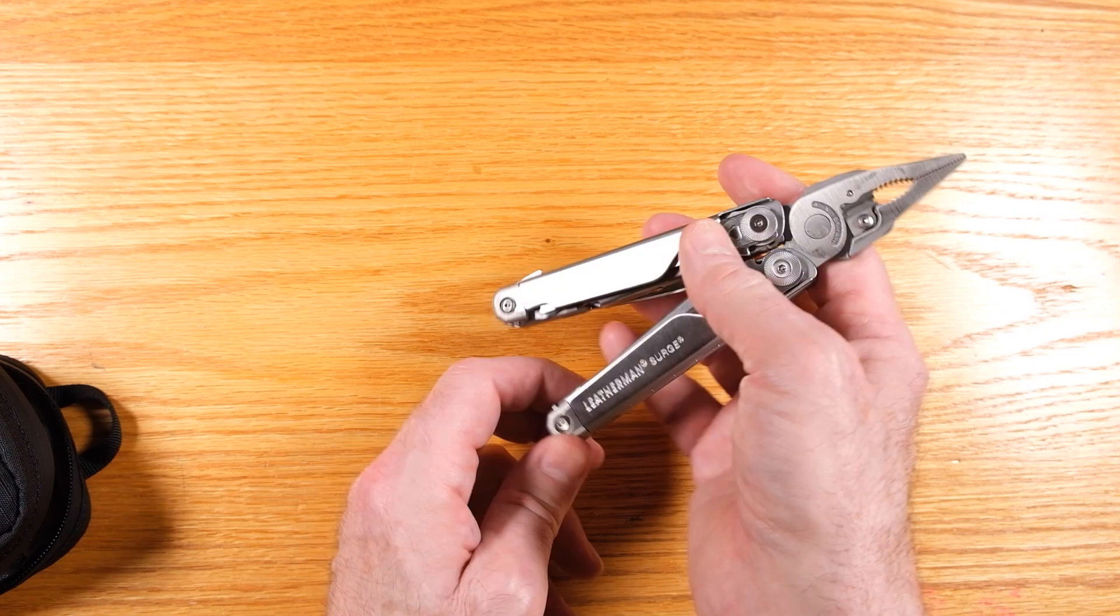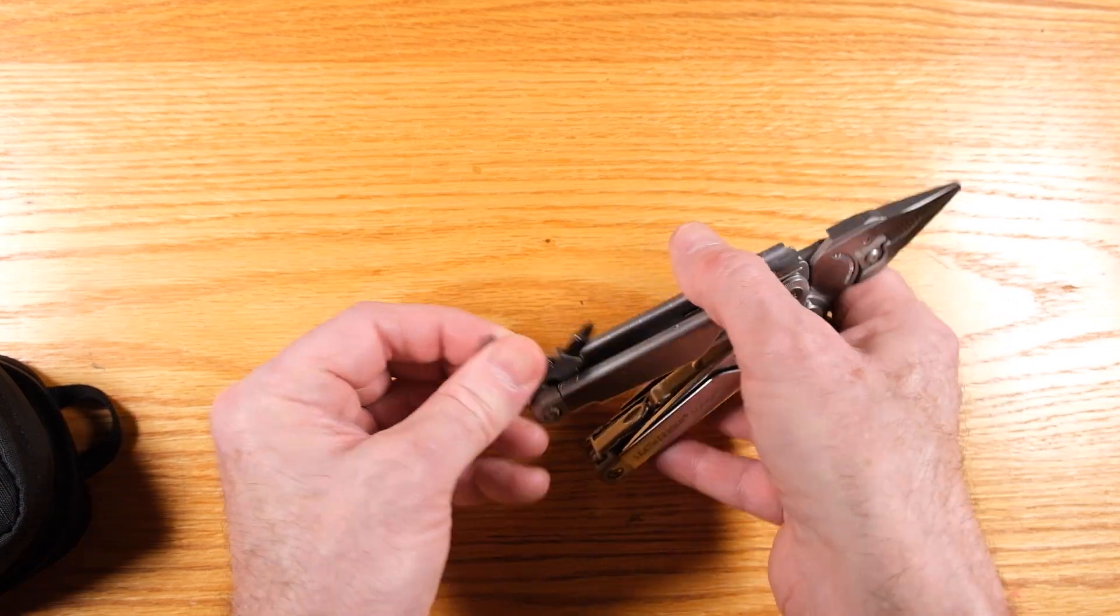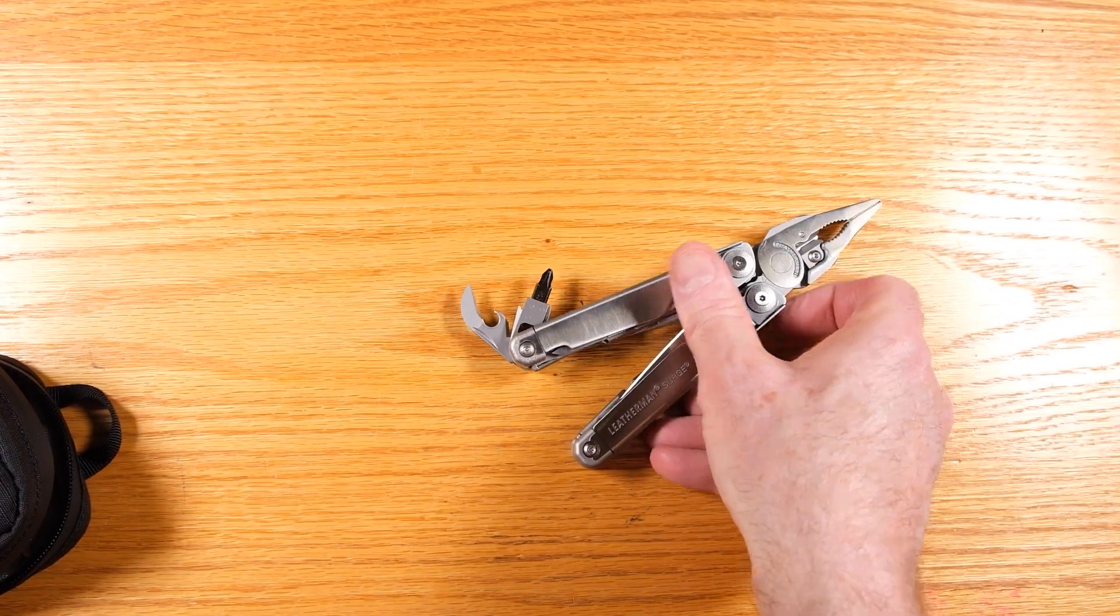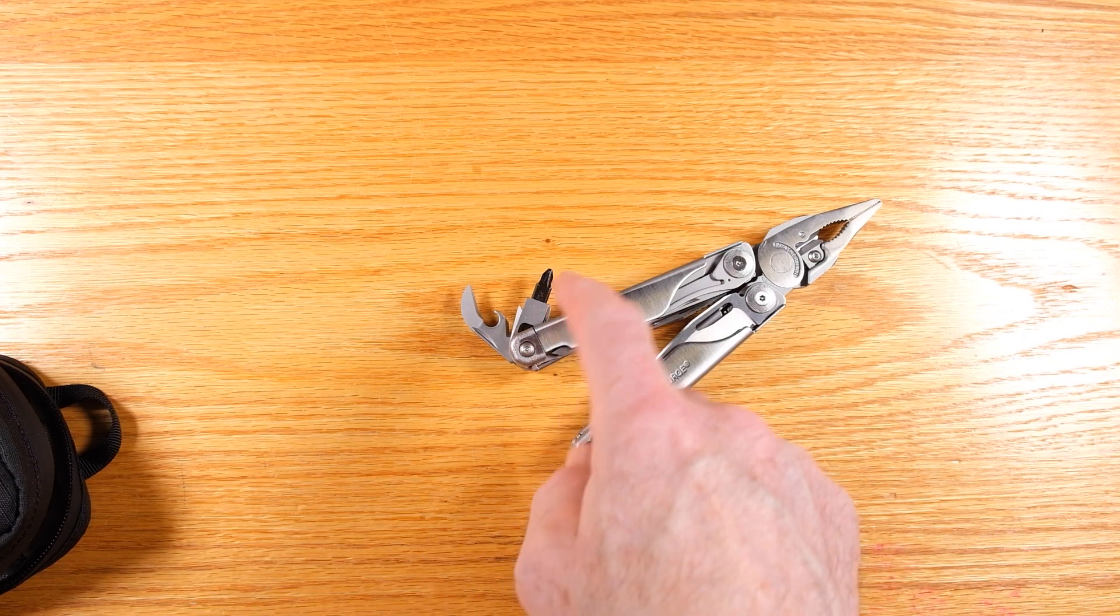And then over on the other side here, we have a can opener, bottle opener and a bit holder. Now, this is one of the things that Leatherman does.